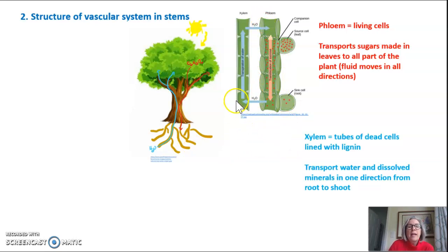If you look at the xylem it is composed of tubes of dead cells that are lined with lignin and that is our molecule that remains a rigid structure and allows plants to grow upright as if they had bones even though they don't have bones. The xylem transports water and dissolved minerals from one in one direction only from the roots all the way up to the leaves so material only moves in that one direction.